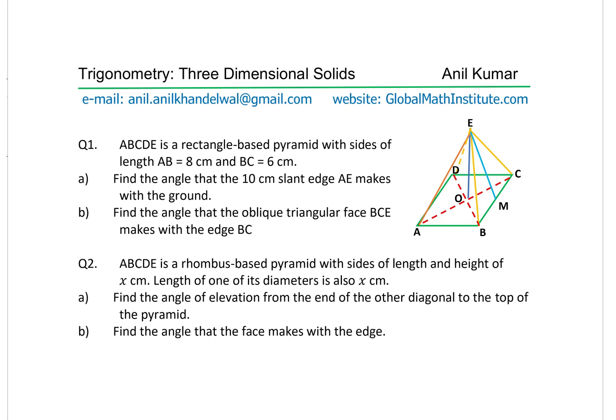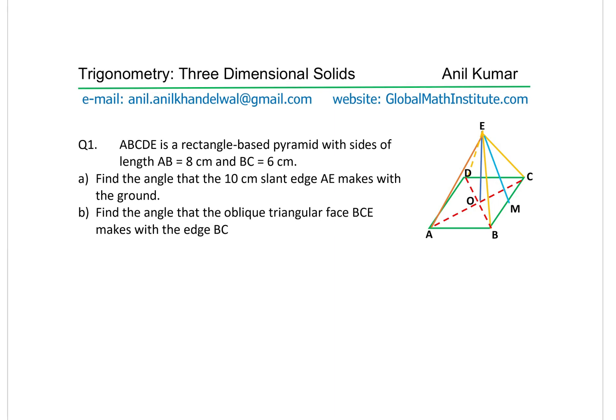Let's take the solution to question number one. ABCD is the rectangular base and E is the vertex. AB is 8 centimeters and BC is 6 centimeters. The slant edge AE is 10 centimeters. The angle it makes with the ground is the angle between the edge AE and the ground, which we can find using the diagonal and the edge.